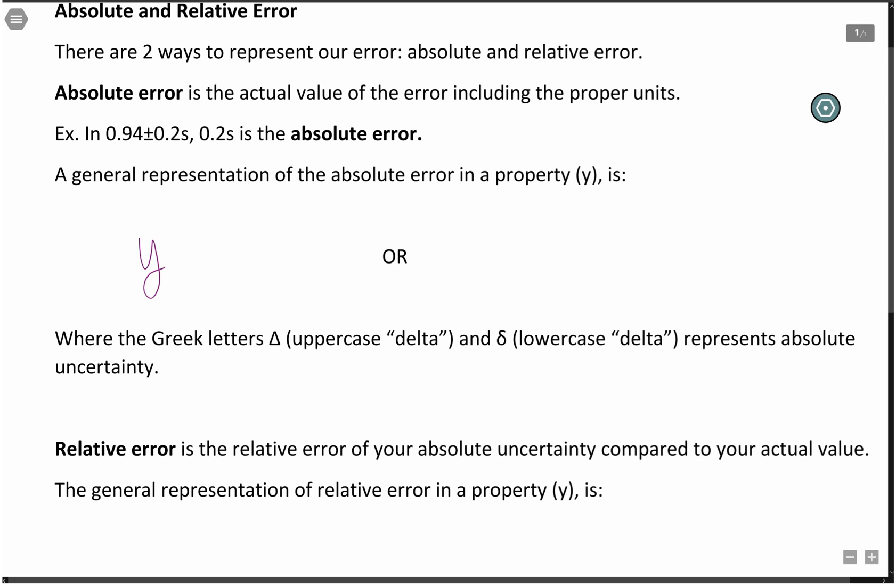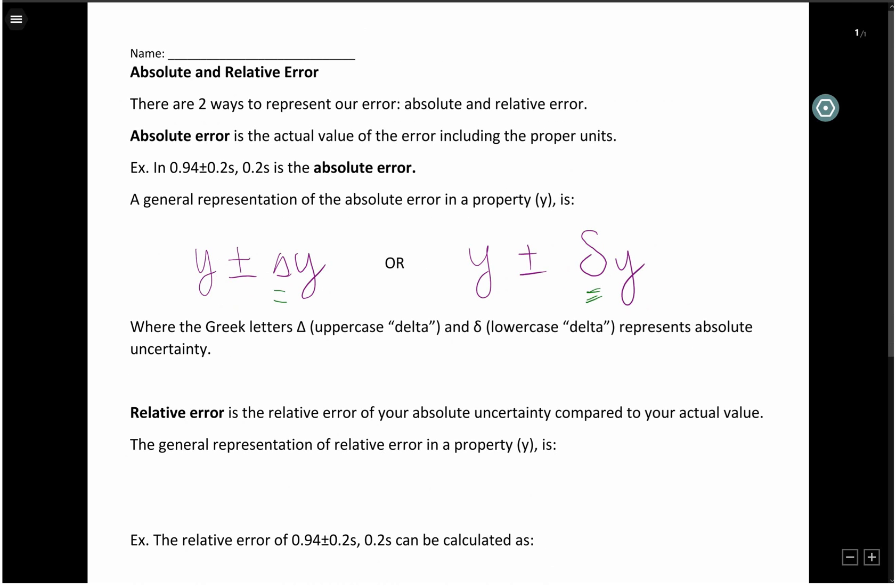A general way to represent this is y ± Δy or y ± δy. So this little symbol here represents the uncertainty, and in Greek it means delta, whether this is uppercase or lowercase. That's a general representation.